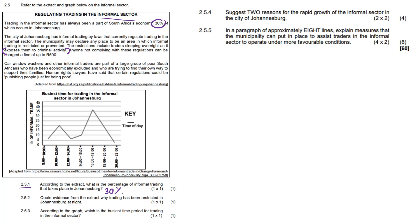According to the graph, which is the busiest time period for trading in the informal sector, that's 2.5.3. Look carefully. It's going to be 4 to 6 p.m. Typically when people are done with work and they need to go off and buy things for their house, for their posy.